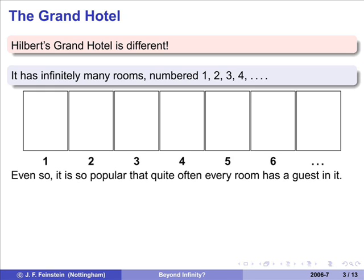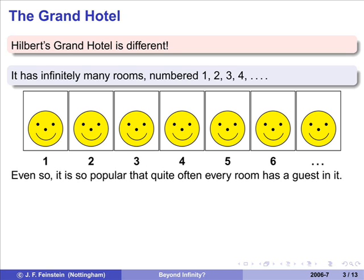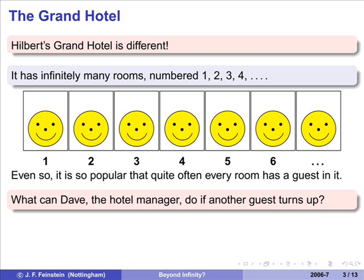Okay, but it's a very popular hotel, and sometimes every room has a guest. That means infinitely many people, but, well, let's assume you can have infinitely many people. One guest in each room. And now what's Dave going to do when one more person turns up?